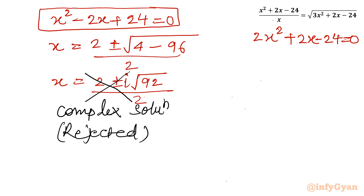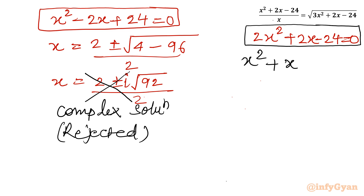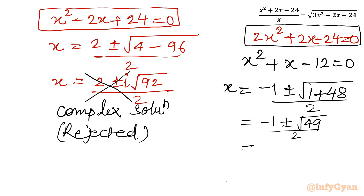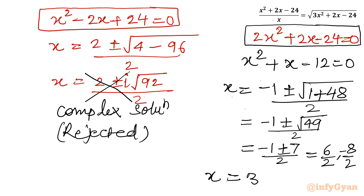Now come to the second quadratic equation: 2x² + 2x - 24 = 0. The equation is divisible by 2, so we get x² + x - 12 = 0. Applying the quadratic formula: x = (-1 ± √(1 + 48)) / 2 = (-1 ± 7) / 2. With the plus sign: 6/2 = 3. With the minus sign: -8/2 = -4. So x = 3 and x = -4.